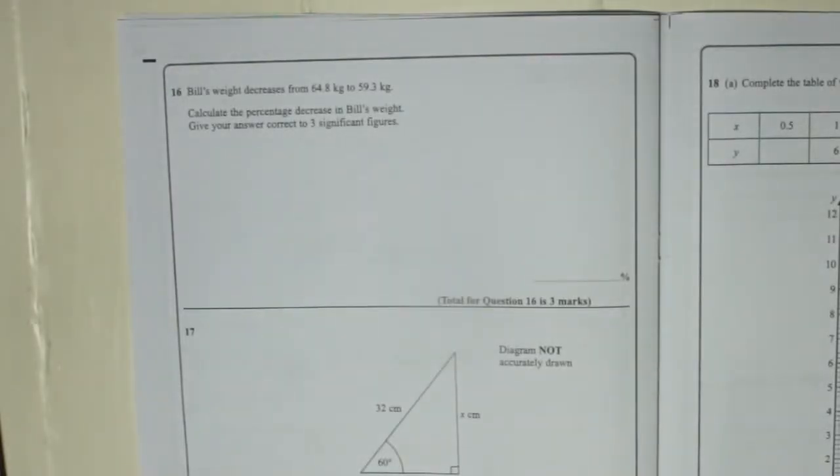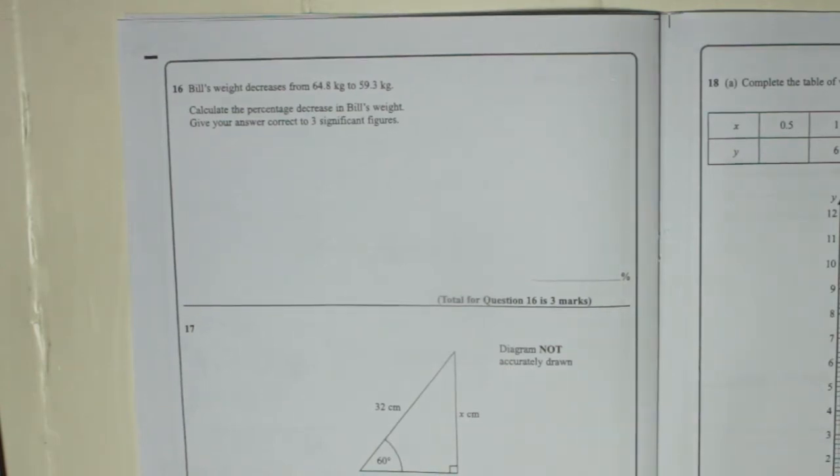Bill's weight decreases from 64.8 kg to 59.3 kg. Calculate the percentage decrease in Bill's weight. Give your answer correct to three significant figures. Now when finding a percentage decrease, first of all find out how much it actually decreased.